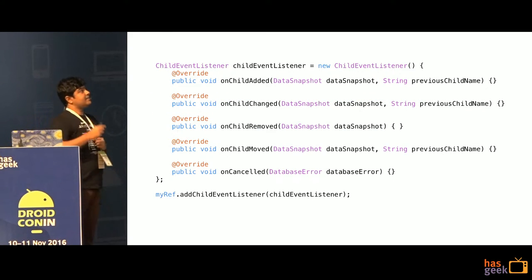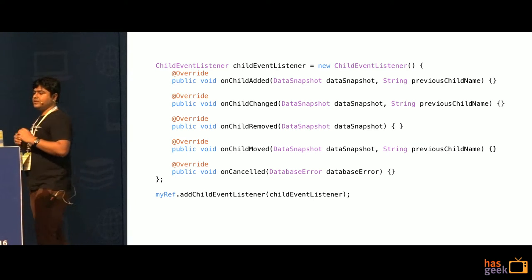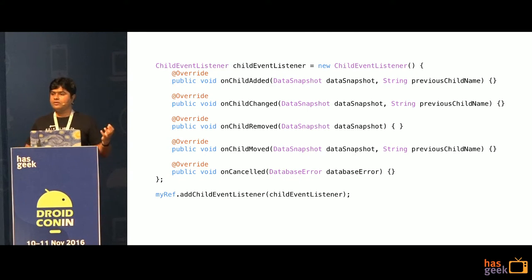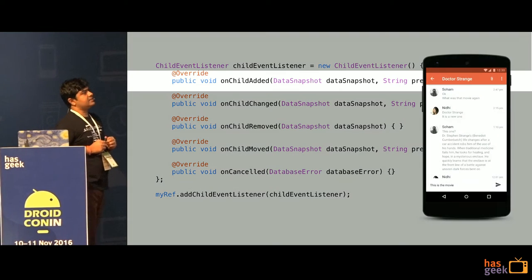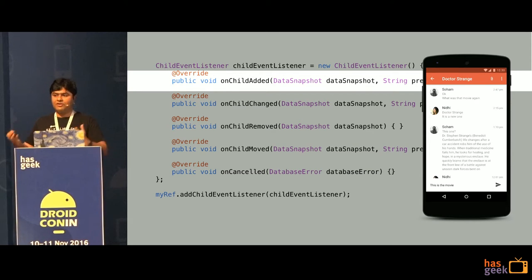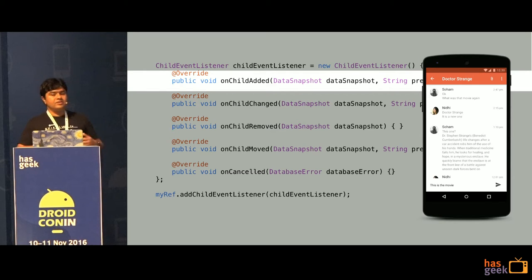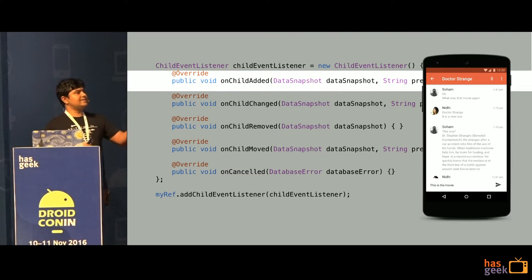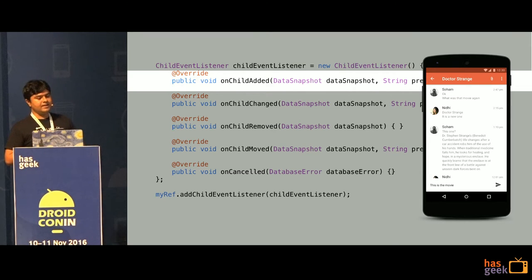There's also a very important method called childEventListener. You should really pay attention to this one. With it, you get callbacks whenever a child is added, changed, removed, or moved. For a chat application with a thousand messages, when a new message is added you'll get a callback in onChildAdded with just the new message — so you can animate it in. If somebody deletes a message, you get a callback and can remove it. This method is very versatile.